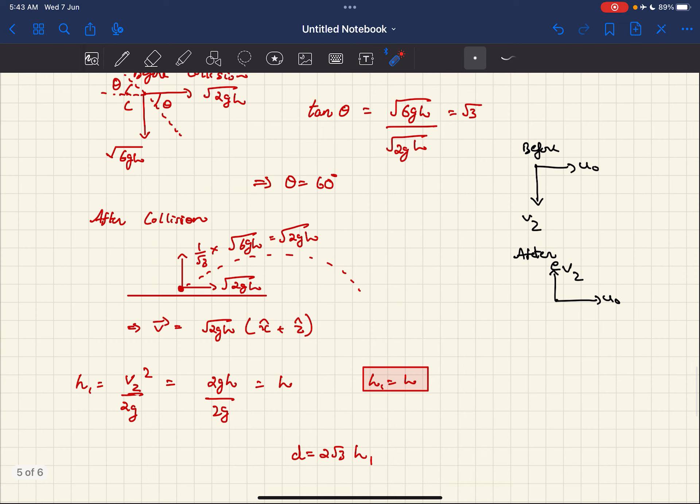Now, H1, which is the maximum height of the projectile after the collision at point C, we can just use the formula VZ²/(2G), where VZ is this vertical velocity. And that we just calculated, it is √(2GH). So this would become H. So we get the value of H1 as H.